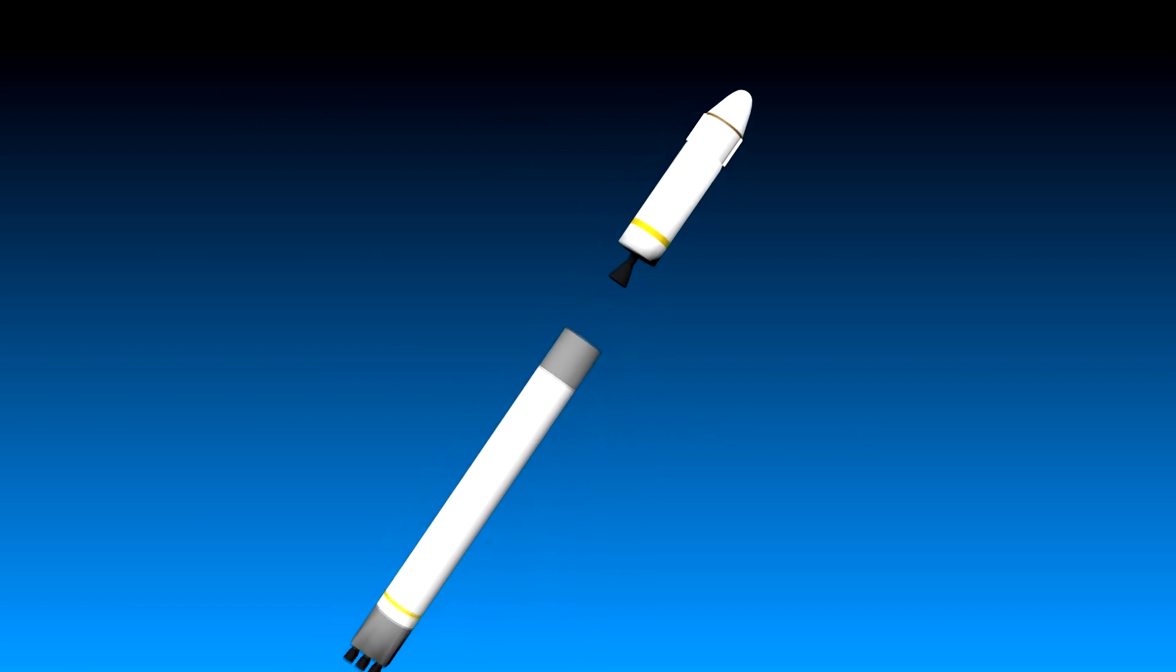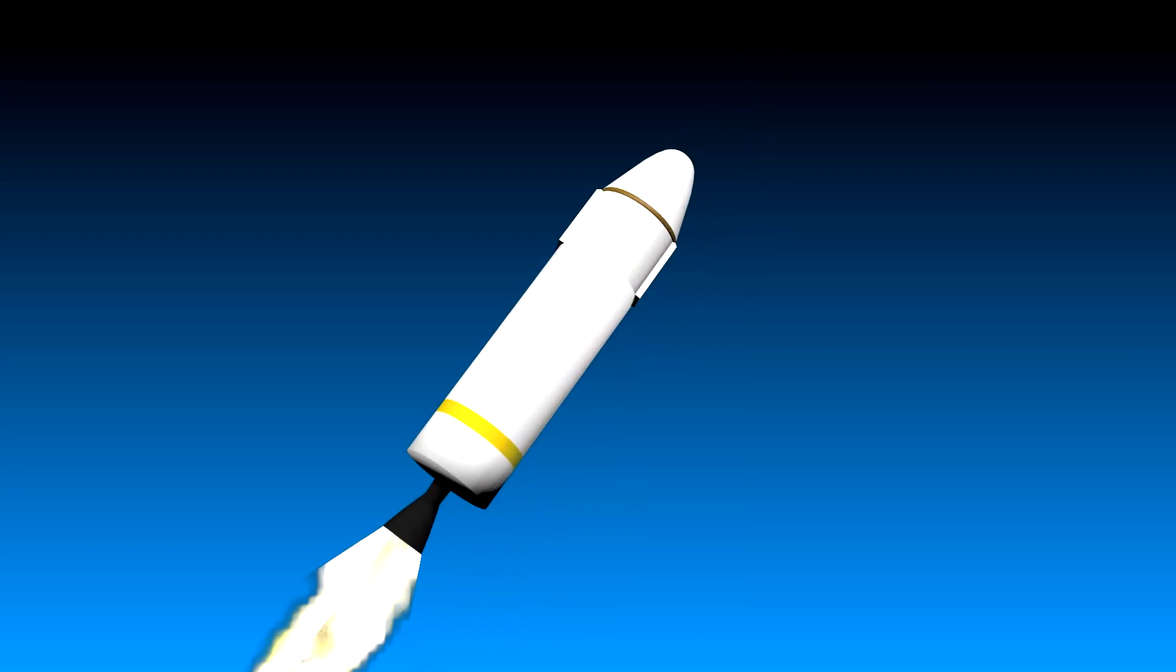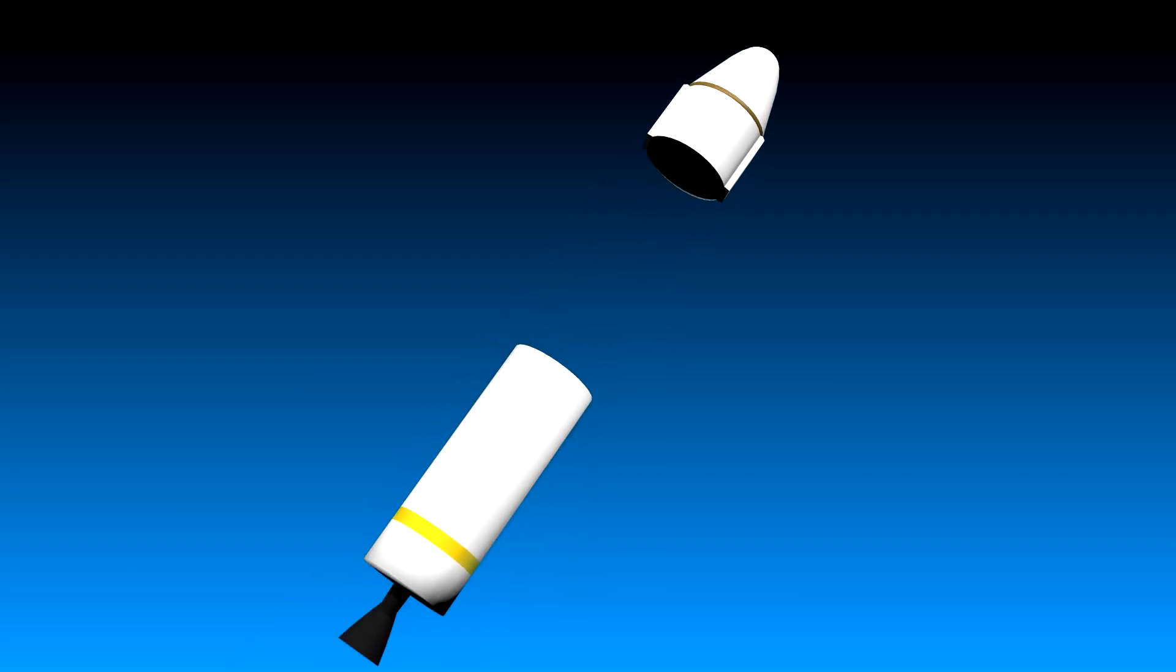Once the propellant is used up for the first stage, the whole stage is separated and left to fall back to Earth, usually into the ocean. Then the next stage is started up, and when it runs out of propellant, that one too is thrown away.